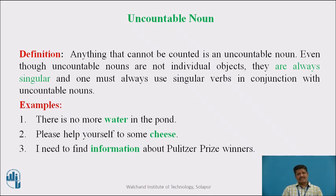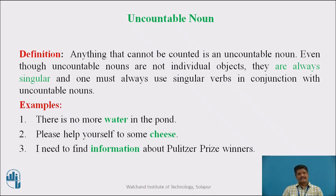Uncountable Noun: anything that cannot be counted is an uncountable noun. Even though uncountable nouns are not individual objects, they are always singular and one must always use singular verbs with them. Examples: 'There is no more water in the pond'; 'Please help yourself to some cheese'; 'I need to find information about Pulitzer Prize winners.' Water, cheese, and information are all uncountable nouns, always in the singular form.